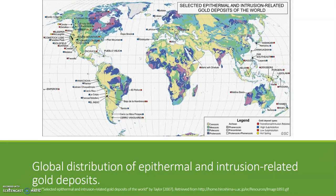Globally, epithermal deposits are located in young igneous rocks associated with active or past subduction. This map shows the location of the different types of epithermal deposits around the world and clearly shows the association of most deposits with young active subducting plate margins. Most deposits are Tertiary age or younger — less than 66 million years — as older deposits have been eroded in areas of active uplift.